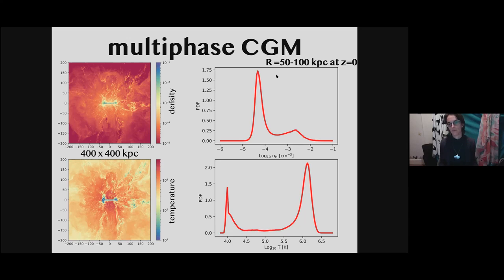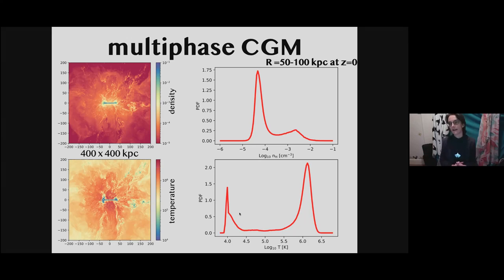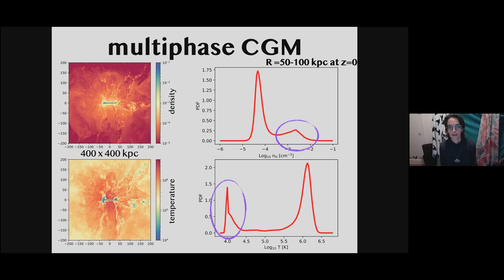This is why we call it multiphase: we have two peaks — one at low density and high temperature, and another at low density but somewhat higher density and lower temperature. I'm going to mostly talk about Milky Way sized halos, about 10^12 solar masses. For these it's very hard to see the hot gas because it just isn't very bright in X-ray. That's why there are a lot of observations of this type of galaxy-halo system at lower temperatures — and that's also the part that's hard to resolve in our simulations.